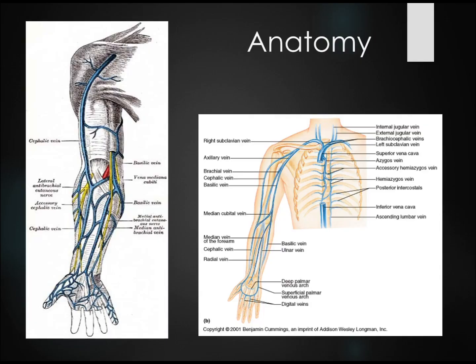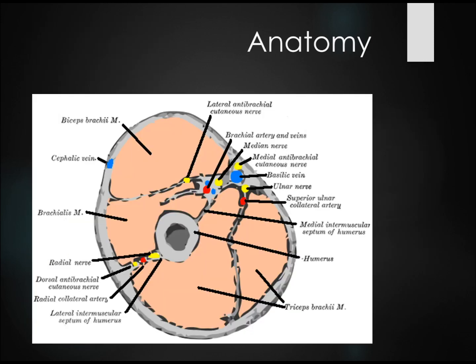Let's talk about anatomy first. Everyone has several large veins: the cephalic vein that goes over the bicep, the basilic vein that runs on the inner arm, as well as the brachial vein, which then splits into the two antecubital veins next to the brachial artery. Here it is in a cross-sectional view. You can see the cephalic vein and the basilic vein.